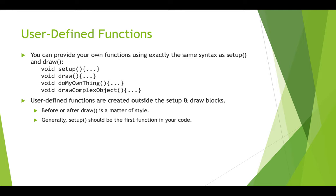User-defined functions in Processing are created outside of the setup function and the draw function — those are functions that already exist. You always want the setup function to be first in your script. Some people put the draw function after that and any user-defined functions at the bottom; others do setup at the top, user-defined functions next, and then the draw function at the very bottom. The most important thing is that the setup function is first in your code after any global variables.